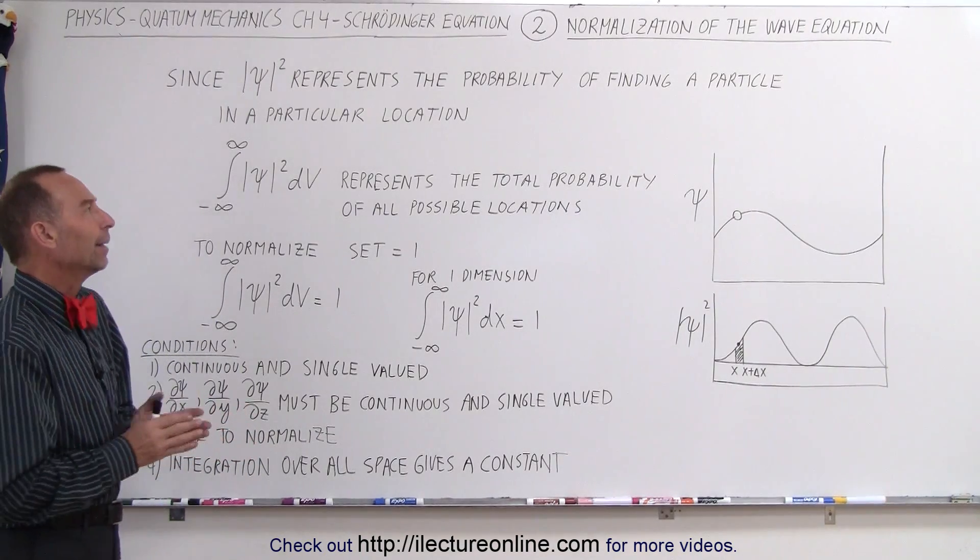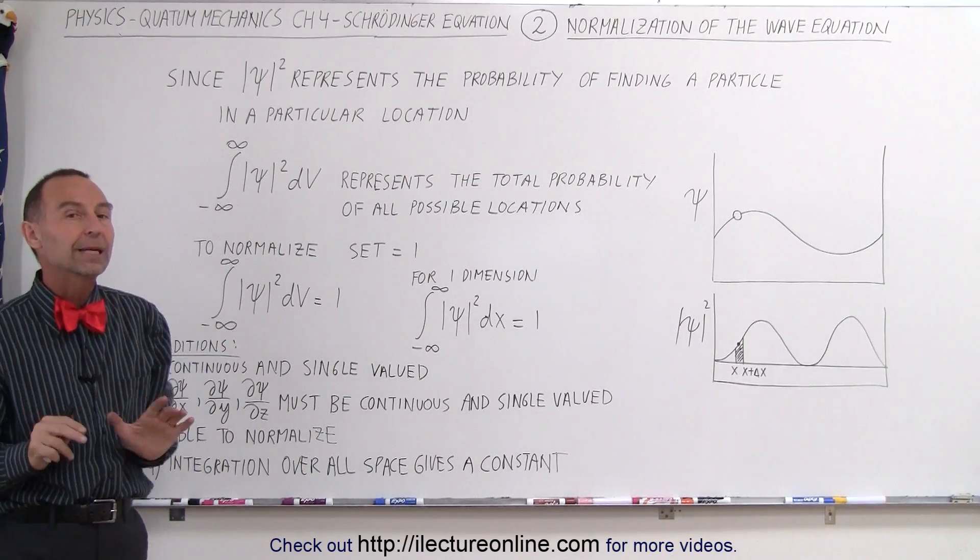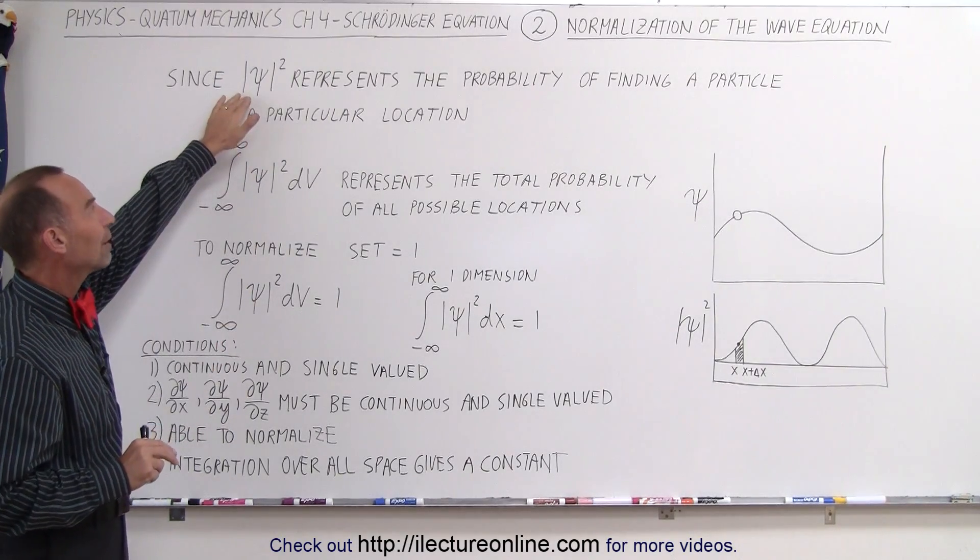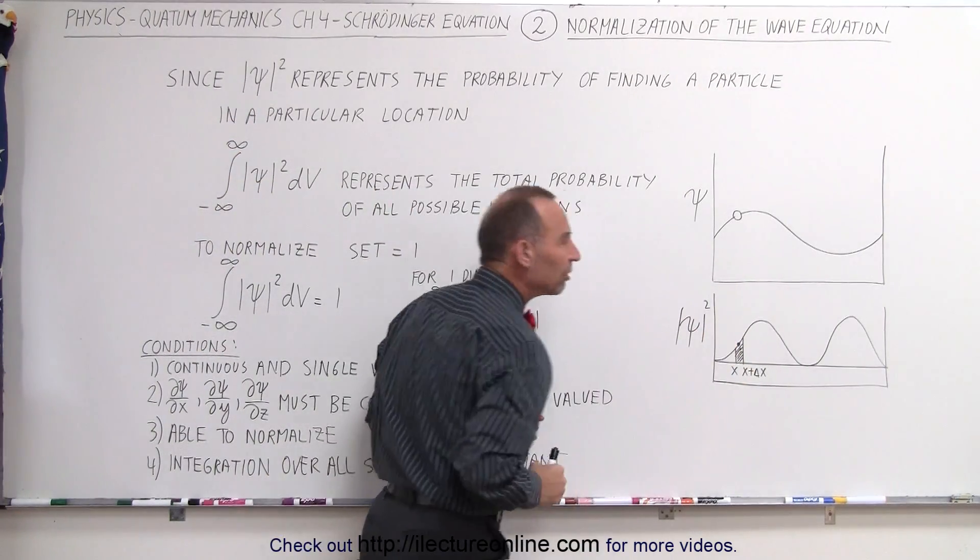What do we mean by that? First of all, we realize that the wave function by itself has no physical meaning, but when we square the wave function, it represents the probability of finding the particle in a particular location.